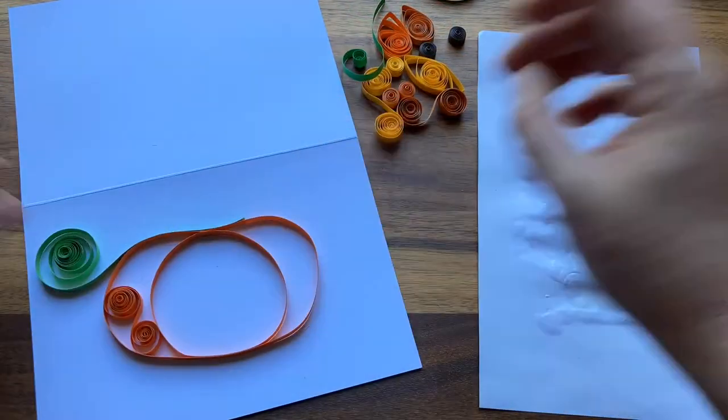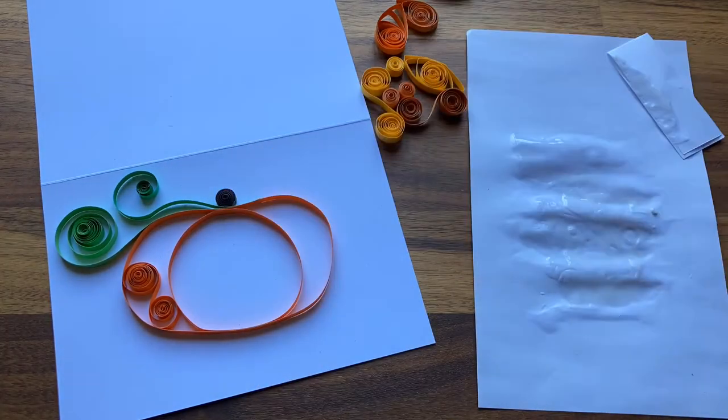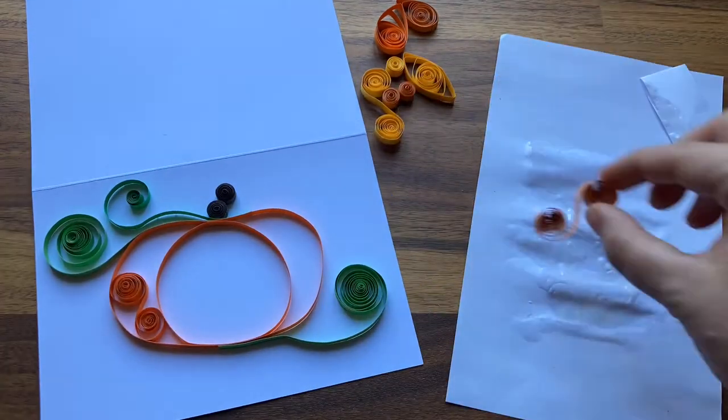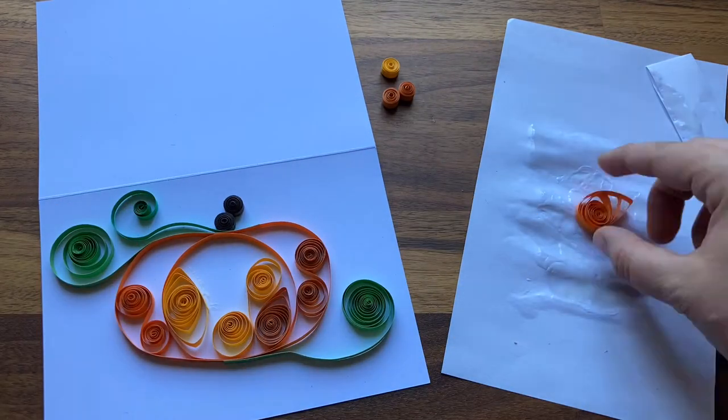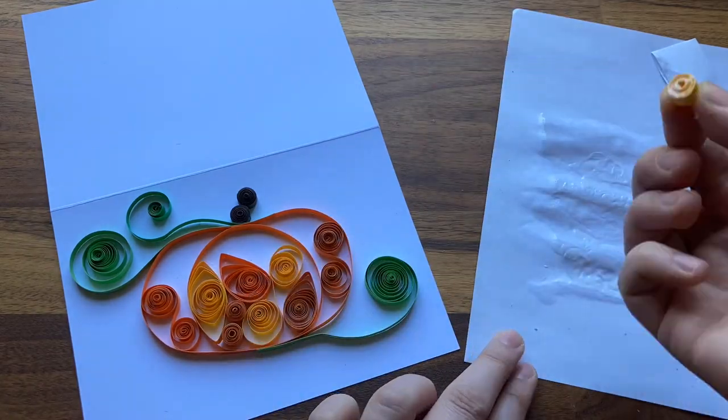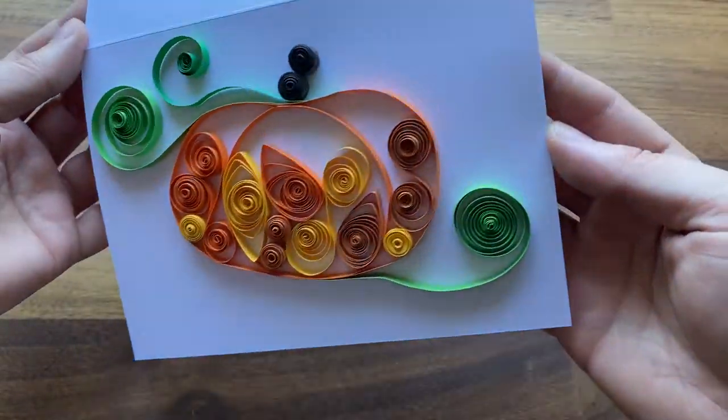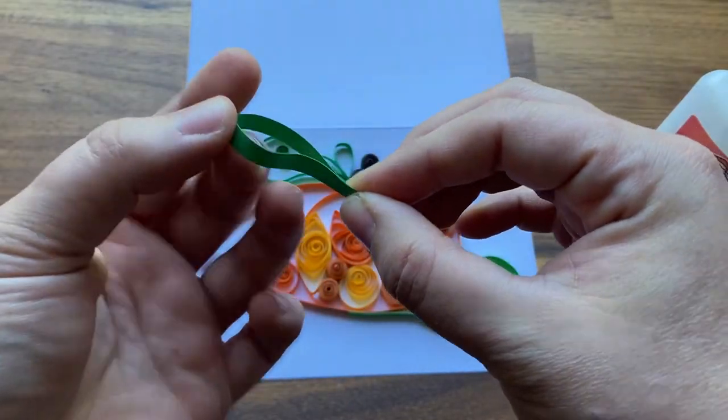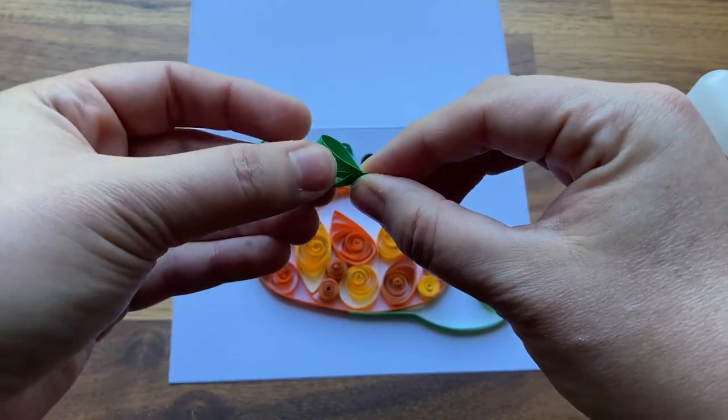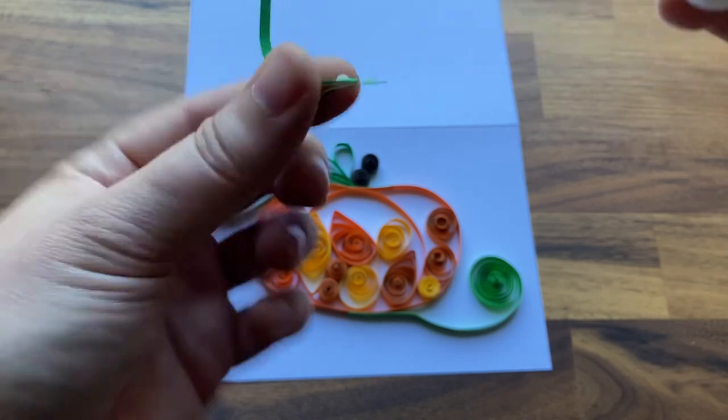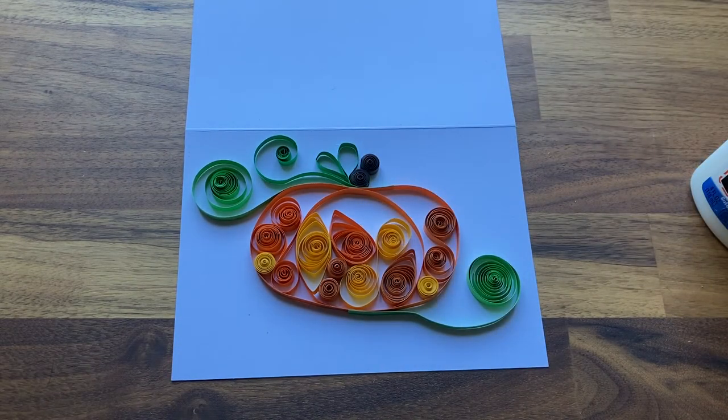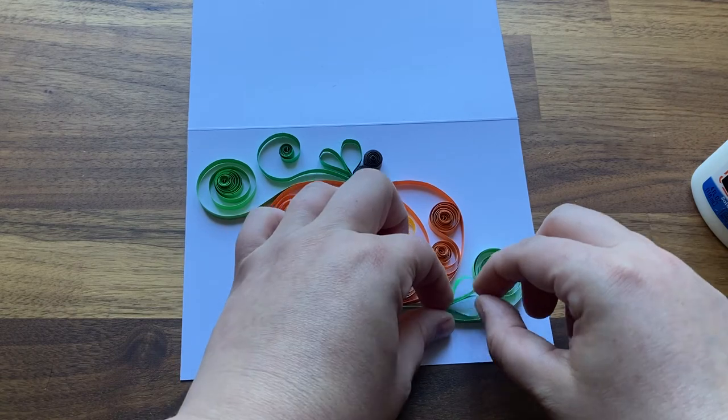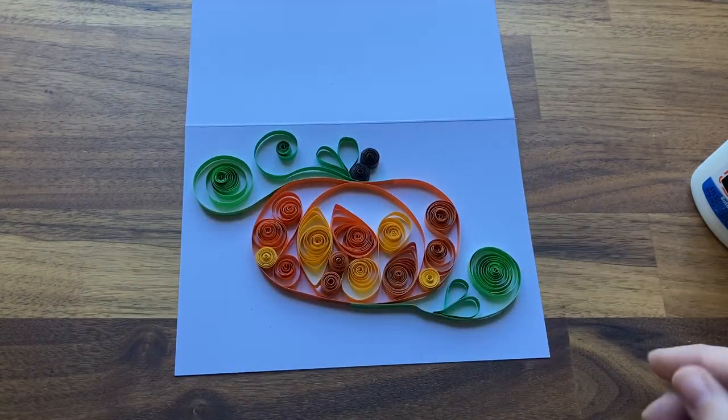There's no right or wrong way to place your shapes, so just have fun with it. I'm going to add a few heart-shaped leaves as a finishing touch. Take a piece of green quilling paper that's about three inches in length, fold it in half, then push the fold towards the center. Glue the ends and the fold together, and you should have a small heart-shaped leaf.